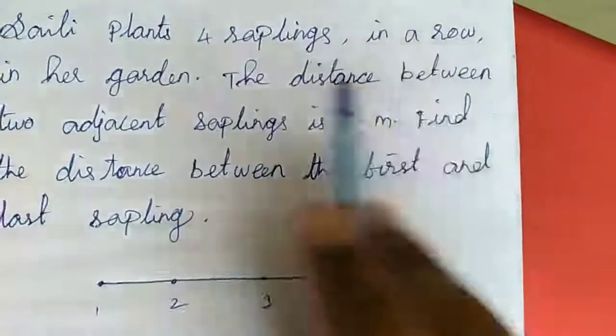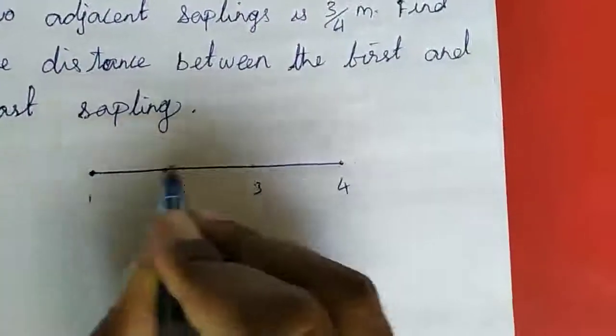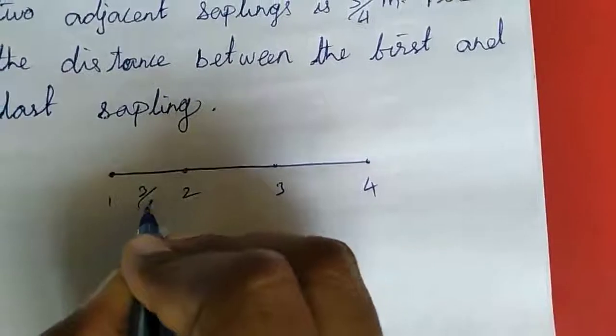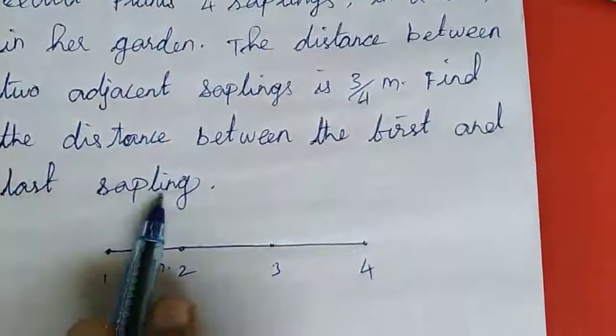See here, the distance between 2 adjacent saplings is 3 by 4 meter. Find the distance between the first and last saplings.